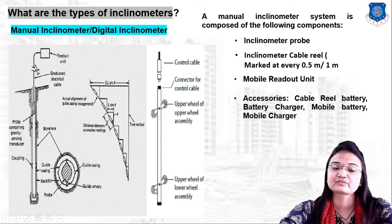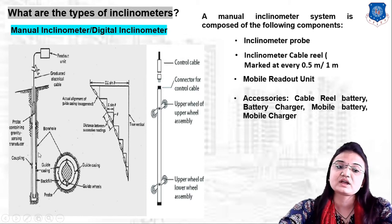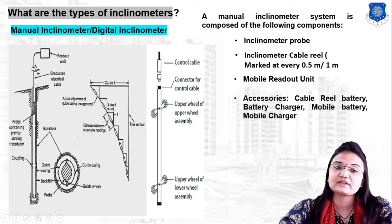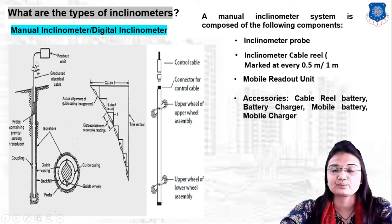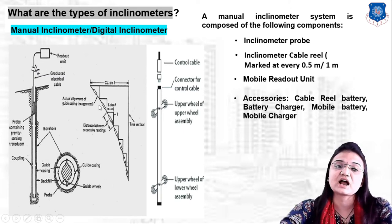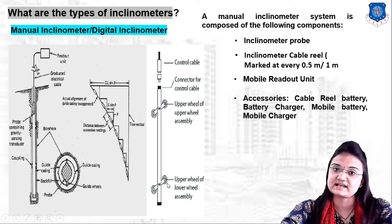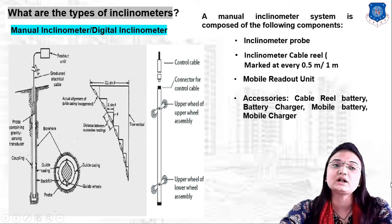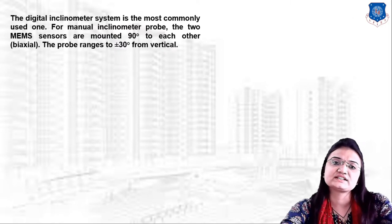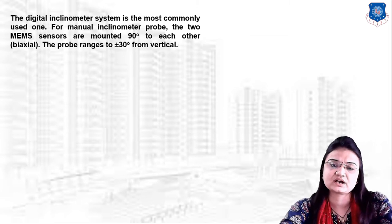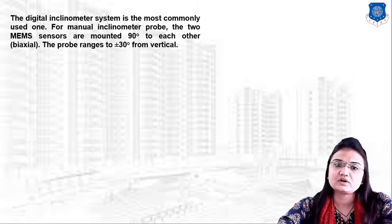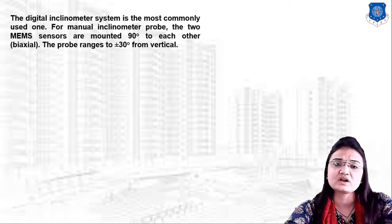As you can see in this image, the inclinometer probe is installed in a borehole. The ground level is visible, and the inclinometer probe is connected to the readout unit by the cable ring, which has marks at every 0.5 or one meter. The probe has upper and lower wheel assemblies that can rotate 90 degrees. The manual inclinometer probe contains two MEMS sensors mounted at 90 degrees to each other.